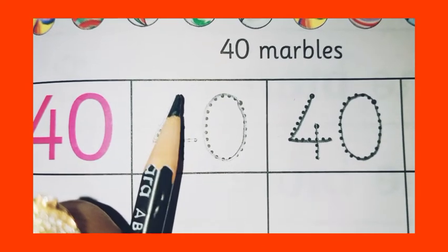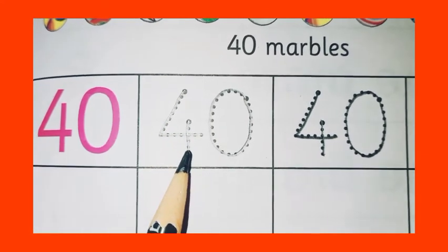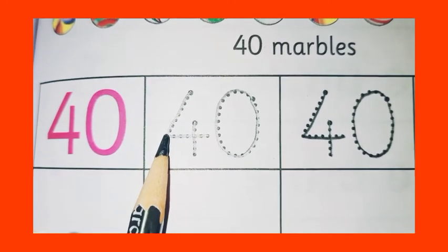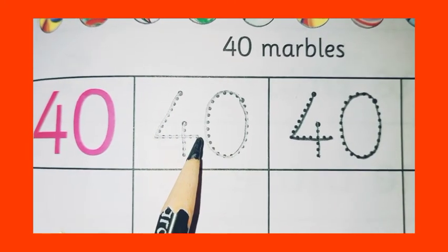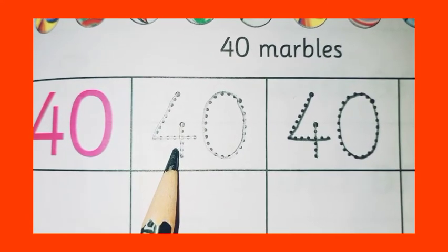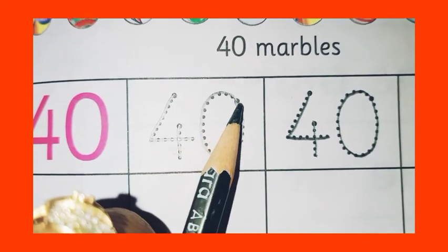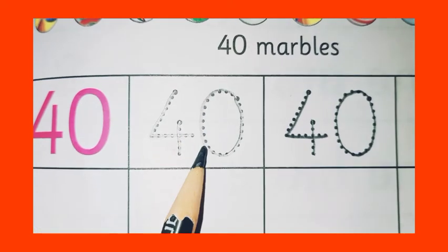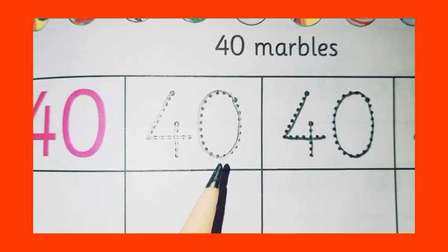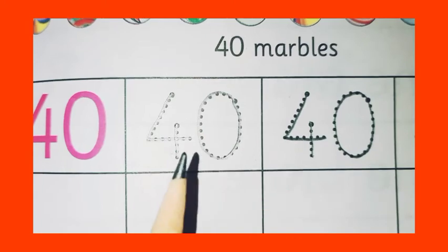Let's start. First of all we draw one standing line. Then we draw one slanting line and join one sleeping line. So this makes 4. Now for 40, we draw a circle round and round. This makes 40.